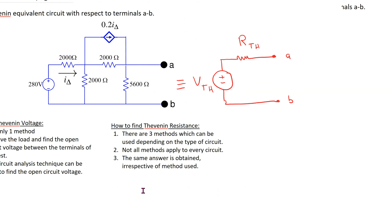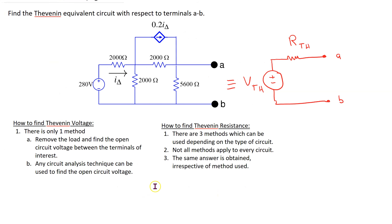The first step is to find the Thevenin equivalent circuit with respect to terminals A and B. This involves finding the Thevenin voltage and the Thevenin resistance. To find the Thevenin resistance, we have to remove the load resistor. This has already been done here — we have terminals A and B with the load resistor removed, and now we need to find the open circuit voltage between terminals A and B.